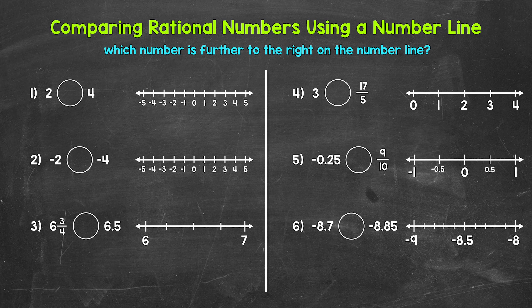Let's jump into number one, where we have a very simple comparison: is two greater than, less than, or equal to four? Obviously two is less than four. I wanted to start very simple because we're going to build off of this. On the number line, two is here and four is here. Four is greater than two — it's further right on the number line. So two is less than four.